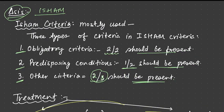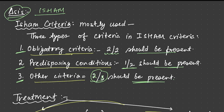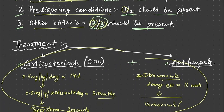Diagnosis by ISHAM criteria. ISHAM criteria itself includes three criteria which are: obligatory criteria, predisposing conditions, and other criteria. Obligatory criteria: two, and two of two must be present. Predisposing conditions are two, one must be present out of two. Other criteria are three and two must be present out of those three.